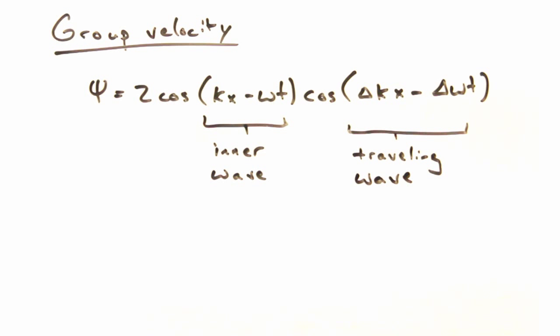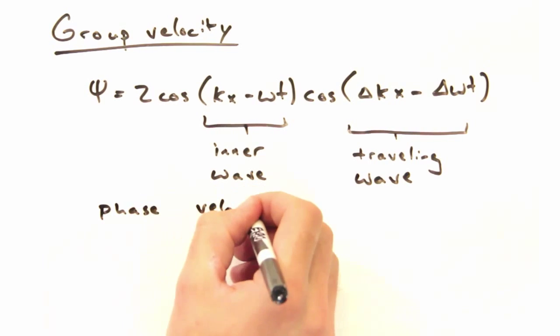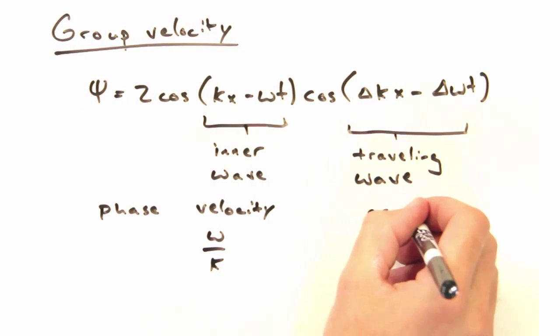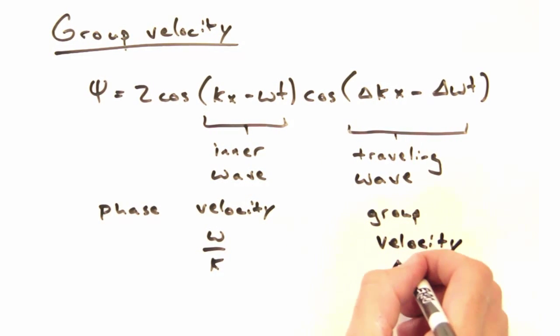Well, what do you think? Well, I know that the phase velocity is omega over k. Oh, so that's going to be this term here. So then this other term corresponds to the group velocity.